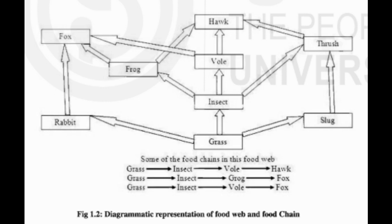1.3.2 Trophic Organization. An ecosystem can be represented by its trophic organization. Pattern of food relationships in an ecosystem is called trophic organization. There are several trophic levels in the ecosystem which are sequentially represented by producers, primary consumers, secondary consumers, tertiary consumers and top consumers. The trophic level, or feeding level, is a way of delineating the position of an organism in the food chain or food web. The producers (green plants) always form the first trophic level. Herbivores, which feed on producers, are at the second trophic level, followed by secondary consumers, tertiary consumers and so on. Fig. 1.2 shows a diagrammatic representation of food web and food chain.